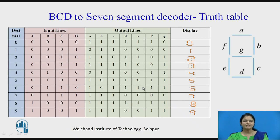For this, the first step will be the truth table. In the truth table, we are having the BCD number as input, then the output in the format of 7-segment, and the display. So in the BCD number we are having inputs A, B, C, D, and that number will be displayed.